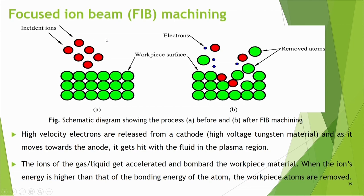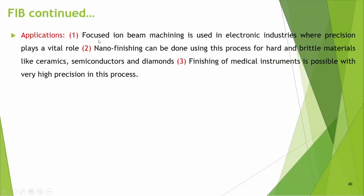Focused ion beam (FIB) machining: like electron beam machining, but material removal is not by thermal action — it is by sputtering. Incident ions hit the workpiece surface and remove atoms: when the ion energy is higher than the binding energy of the atom, workpiece atoms are ejected. Applications include electronic industries where precision is vital, nanofinishing of hard and brittle materials like ceramics, semiconductors, and diamonds, and finishing of medical instruments with very high precision.